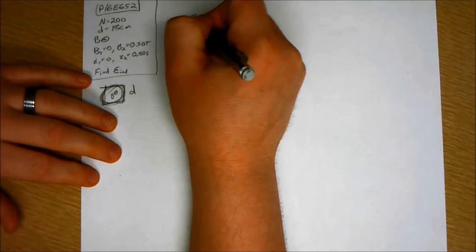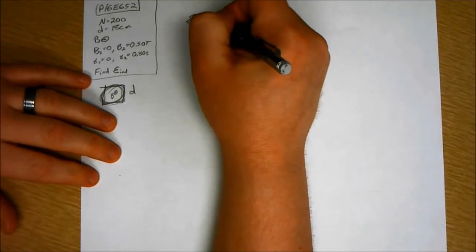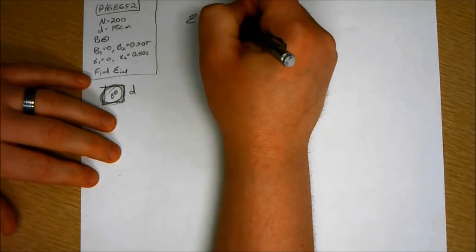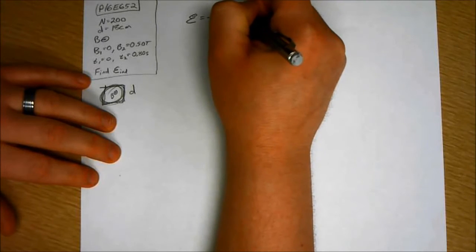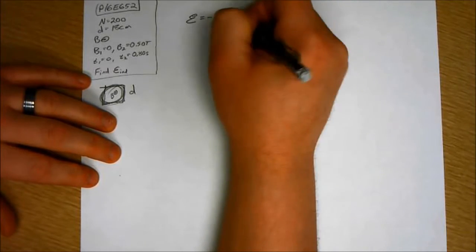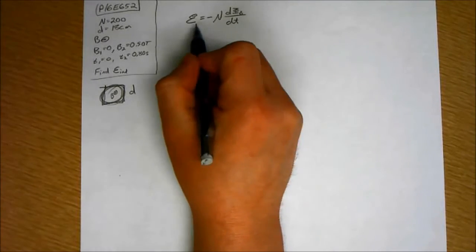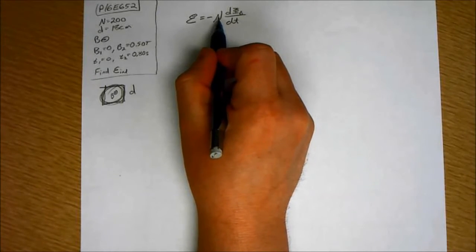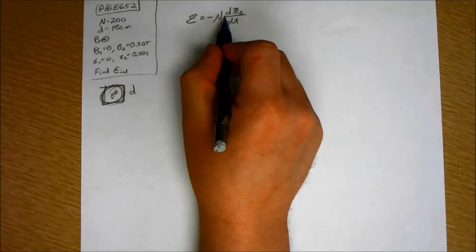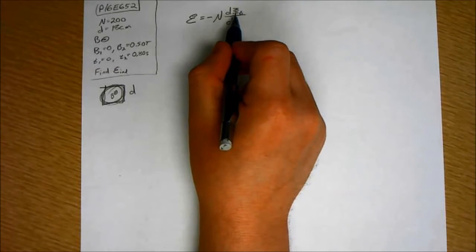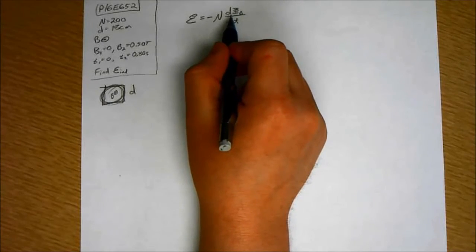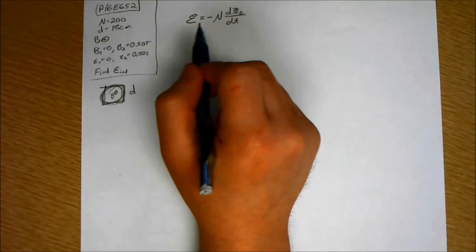So this is a Faraday's Law problem. So the induced EMF by Faraday's Law is equal to negative N d phi B over dt. So that's negative the number of turns multiplied by the time rate of change of flux, the derivative of magnetic flux with respect to T.